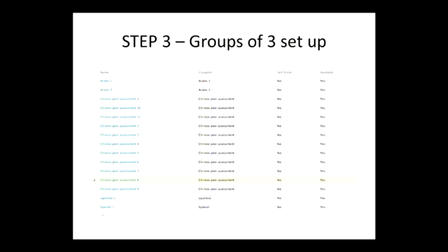Zhang Dong sent me the group composition via email — each group consisting of three people with specified student numbers and names. We labeled them up accordingly. We had two Spanish students, so they peer assessed each other — there was no collusion there at all, though anonymity was a bit difficult with only two. We had a significant number of Arabic students and a large portion of the cohort were Chinese, so the peer assessment was more robust for those groups.